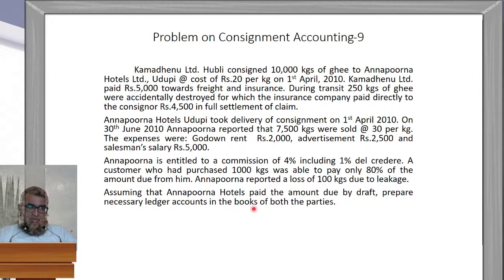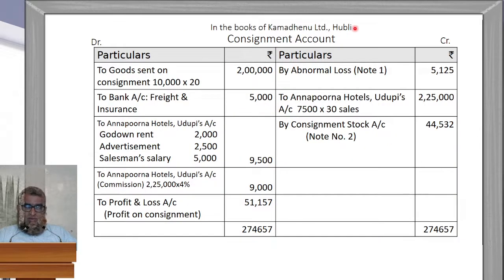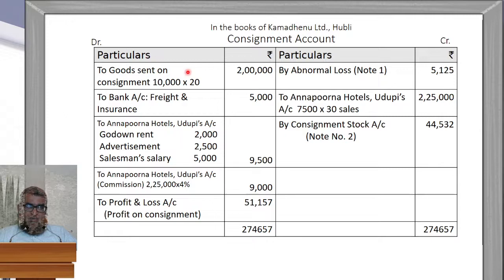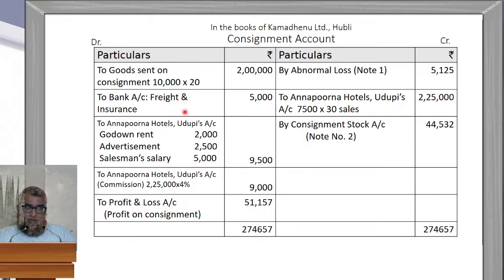We will prepare the necessary ledger accounts in the books of both parties. First, in the books of Kamadenu Limited, the first ledger is the Consignment Account. The first entry is goods sent on consignment: 10,000 kg into Rs. 20 = Rs. 2,00,000. Kamadenu Limited also paid Rs. 5,000 as freight and insurance, which is entered as 'By Bank Account.'